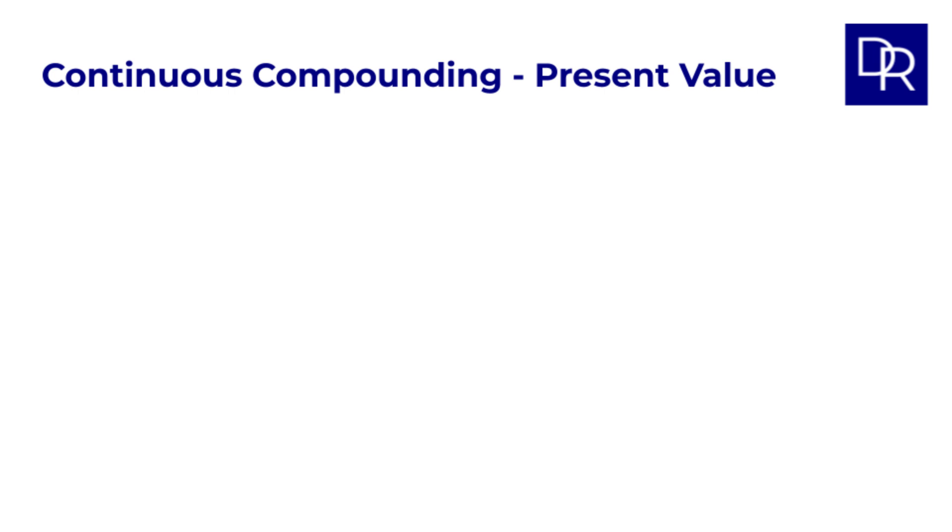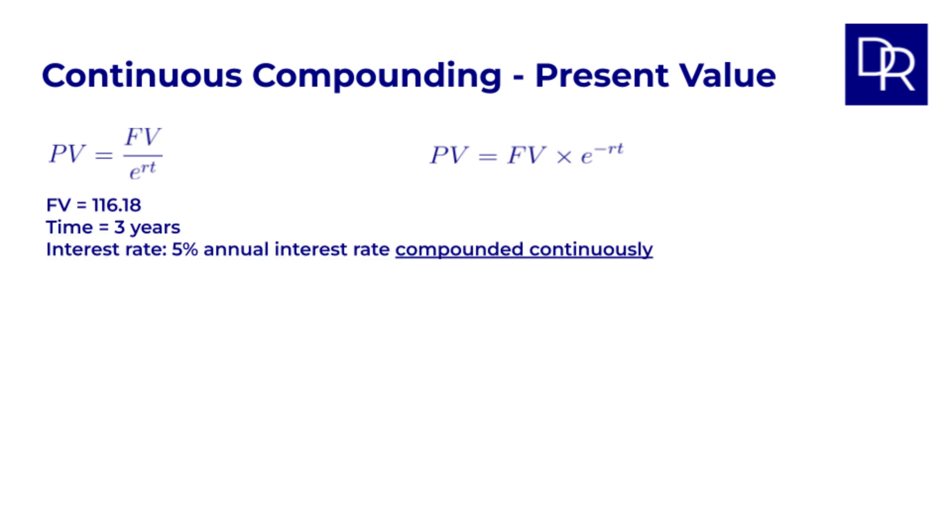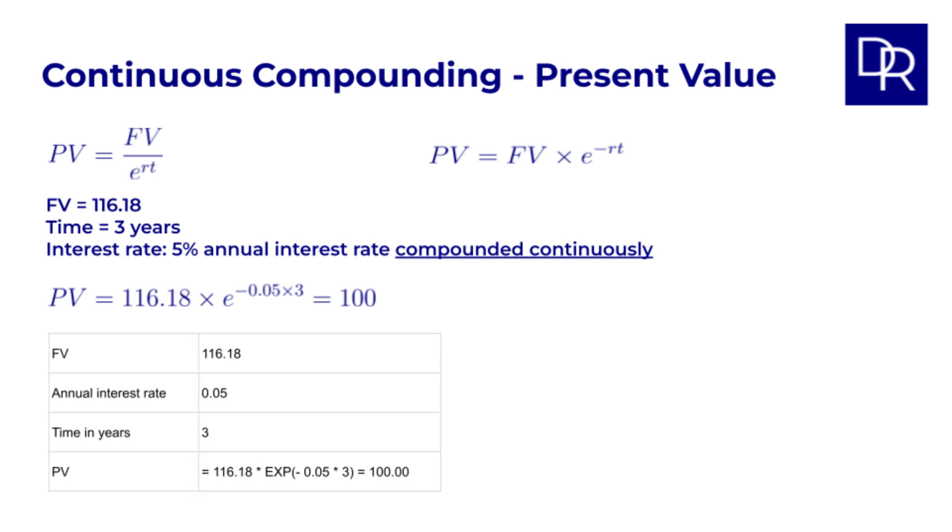Just like with discrete compounding, we can rearrange the future value formula to find the present value. PV equals FV divided by E to the power RT. We normally write this as PV equals FV times E to the negative RT. Let's check this quickly also with an example to again see that the PV calculation is just the FV one in reverse. We start with an FV of 116.18, again 3 years and 5% interest. PV equals 116.18 times E to the negative 0.05 times 3 and we get back 100 as we expect. And let's see this also in our spreadsheet. We again use the EXP exponential function, plug in the numbers and get 100.